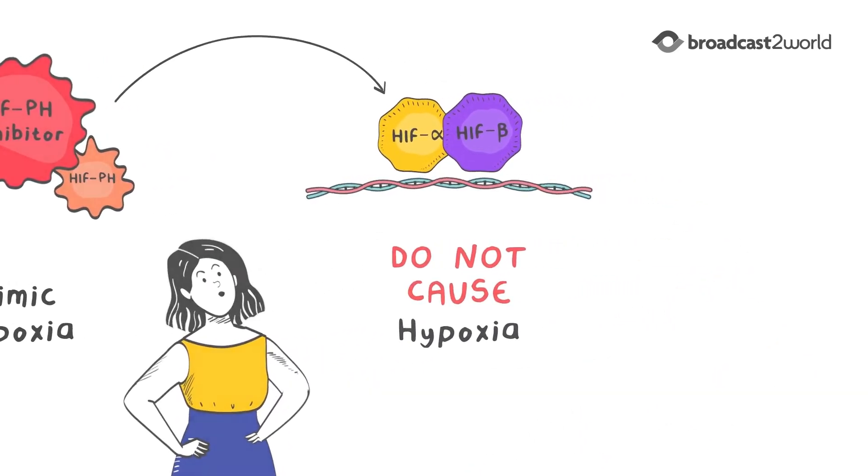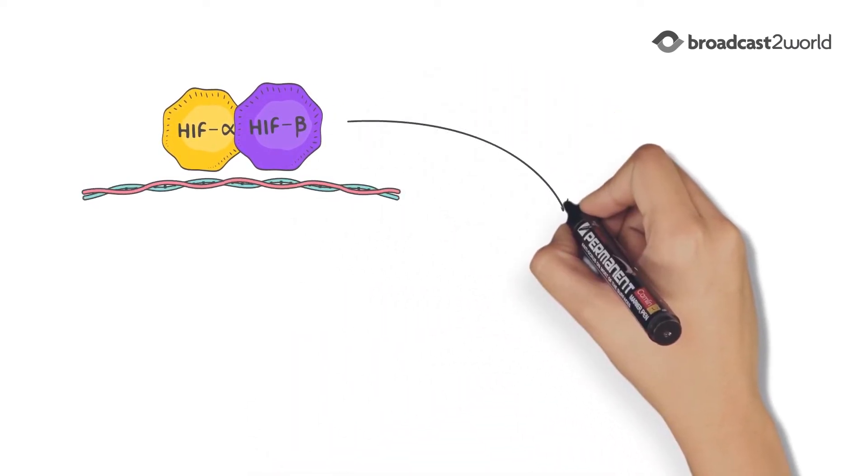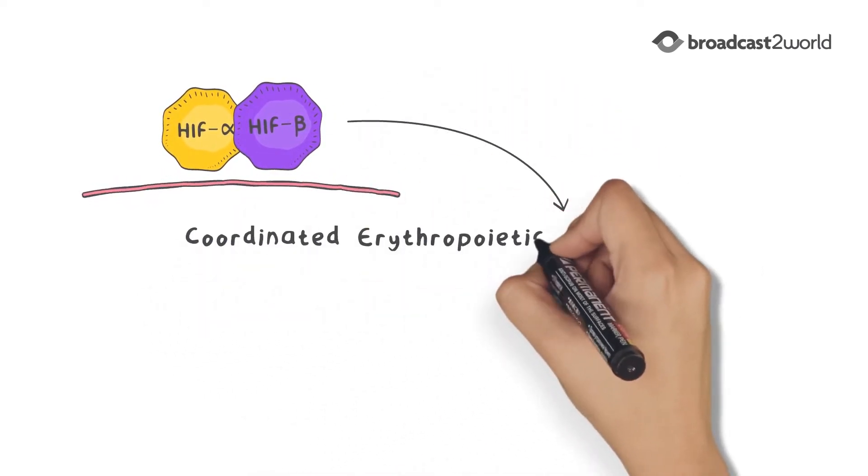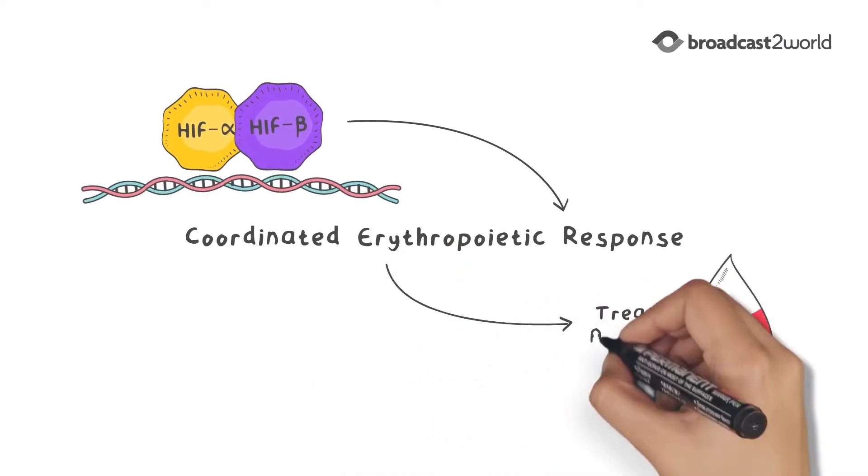Now, let's better understand how activation of the HIF pathway leads to a coordinated erythropoietic response, and may be an effective way to treat anemia.